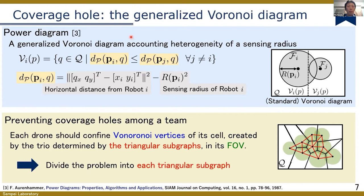To prevent the appearance of coverage holes in between a drone network, we paid attention to the power diagram. The power diagram is known as the generalization of the standard Voronoi partition to robot networks with heterogeneous sensing regions. If we use the standard Voronoi partition, it separates the environment by the bisector regardless of the sensing regions of the robots. In contrast, the power diagram allocates a broader region to the sensor having a large sensing field, as you can see in this animation.